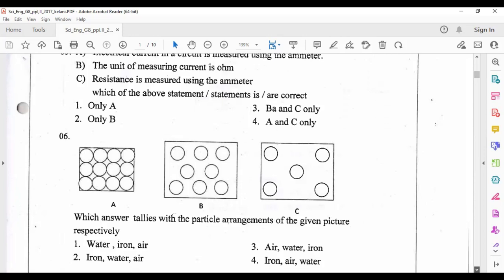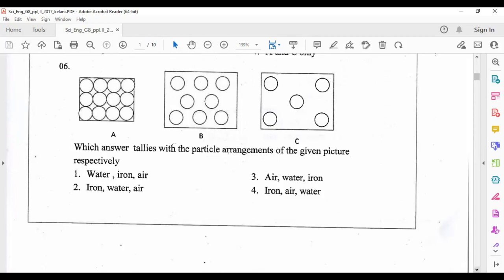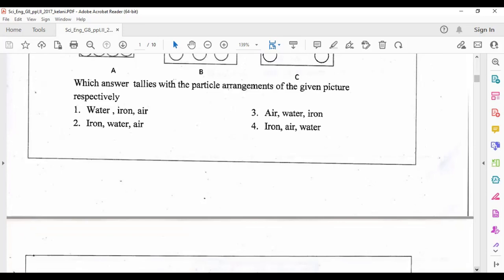Question six: which answer tallies with the particle arrangement of the given picture respectively? In A you can see solid, in B you can see a liquid according to the particle arrangement, in C you can see a gas. So answer number two is correct: iron, water, and air are the three arrangements because iron is a solid, water is a liquid, and air is a gas.